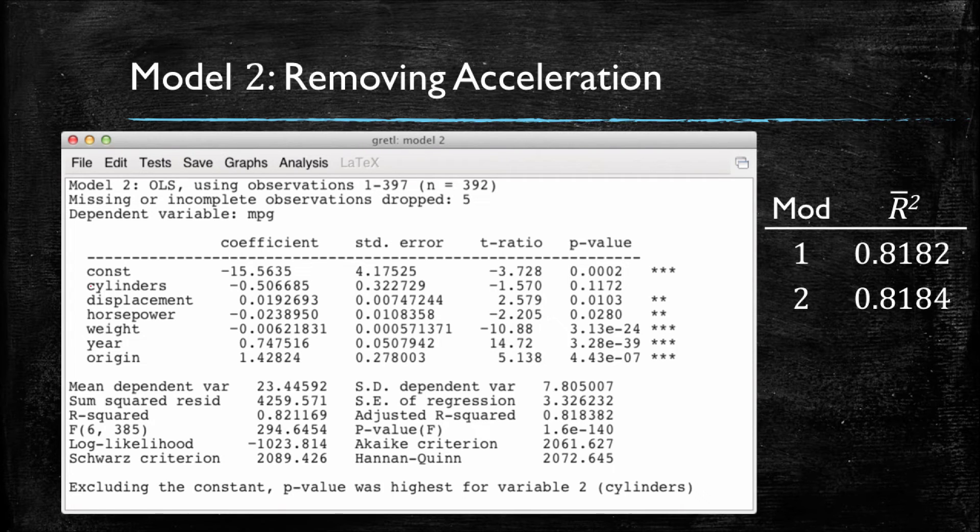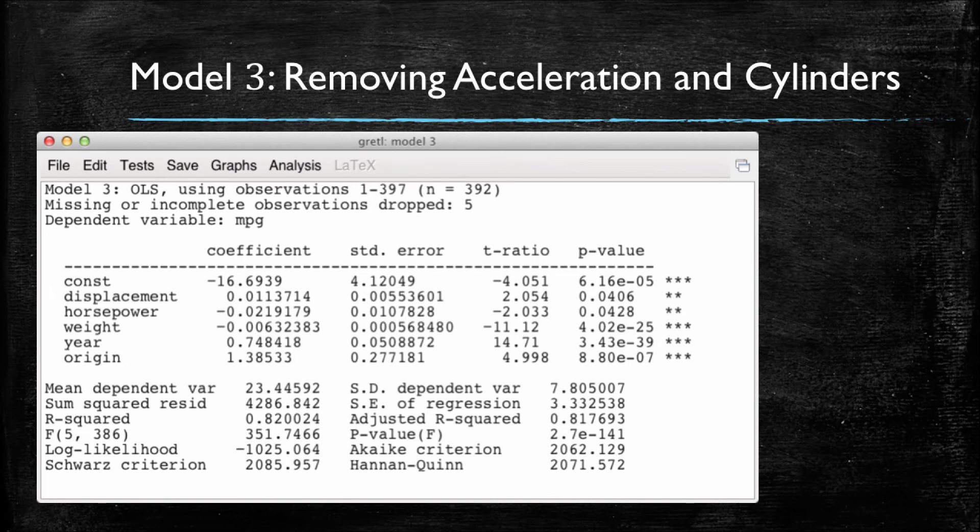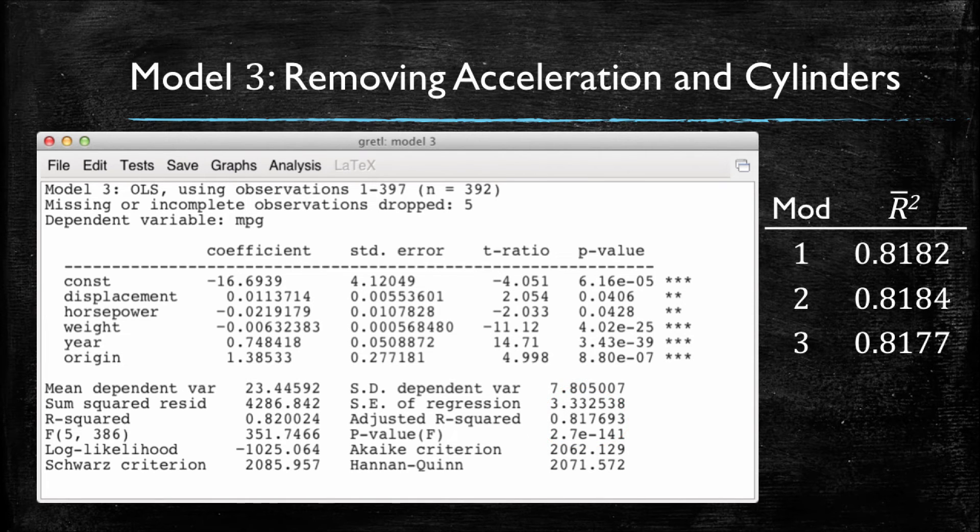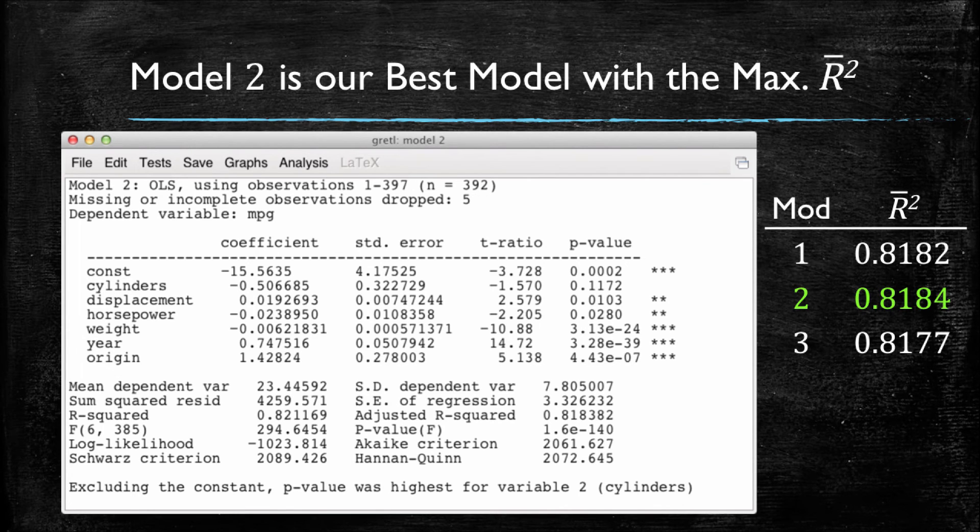The next step we had taken was to remove cylinders, which was the remaining variable with no statistically significant relationship with the dependent variable. And let's see what happens. Note that in this case, the adjusted r-squared is 0.8177. This value is actually lower than the previous result, meaning that having cylinders into our model was not that bad after all. And cylinders, even though on its own does not appear to have a statistically significant relationship with the car's miles per gallon, it does contribute to our model's performance in being able to explain the variance of the dependent variable. We then go back to the second model and choose that since this one has the highest adjusted r-squared, this is the best model we have found so far.